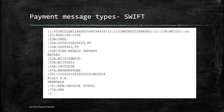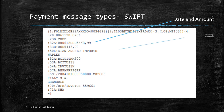Let's take an example of a SWIFT message type. This is how a typical customer transfer looks like — it has lots of field tags and their corresponding values. For example, field 32A depicts the date of transfer, the currency, and the amount. Field 50K has the name of the ordering customer, and field 59 has the credit account or the beneficiary account.